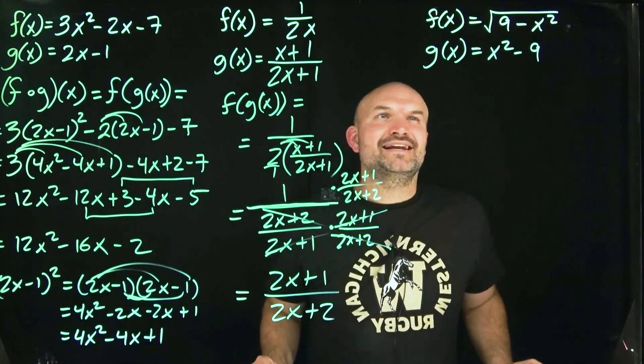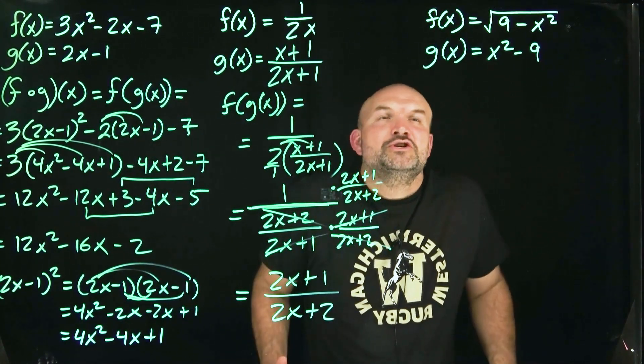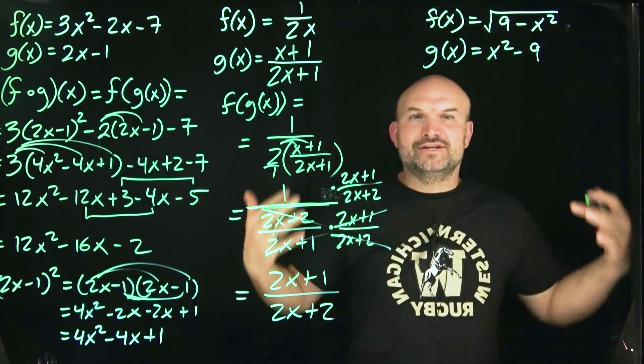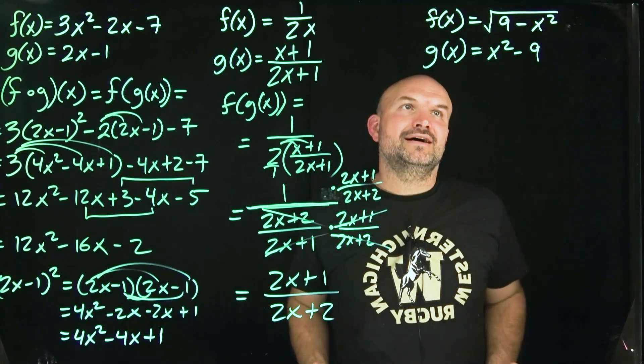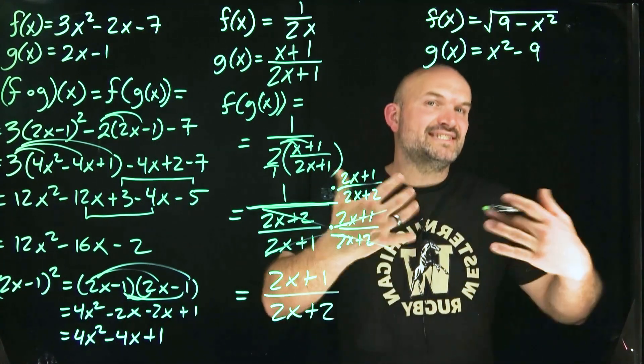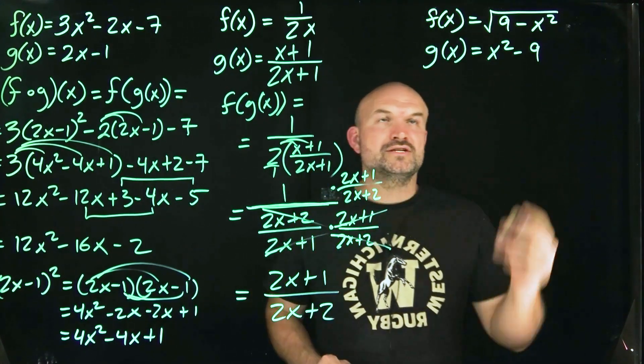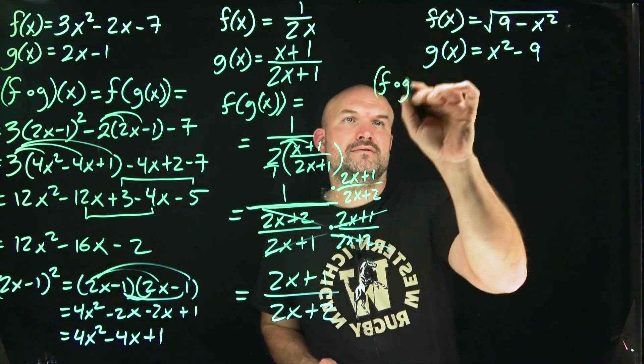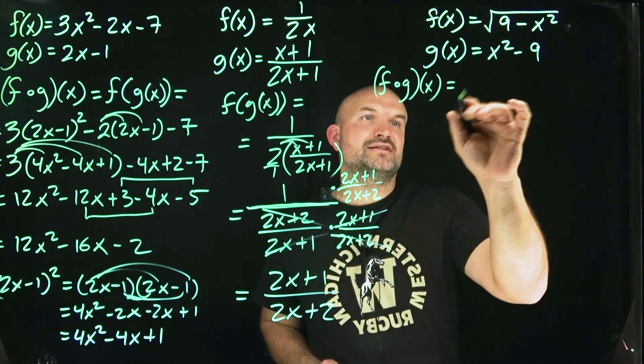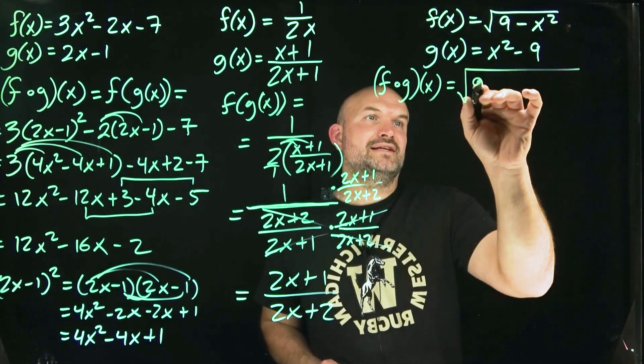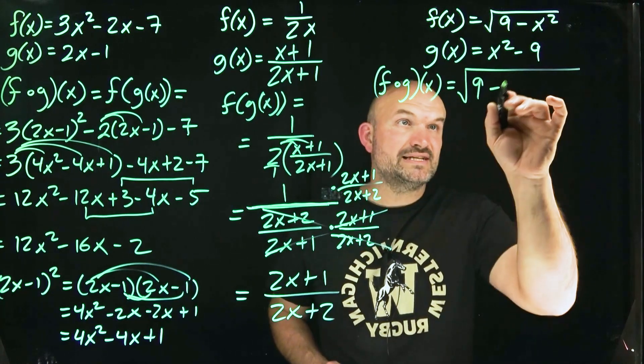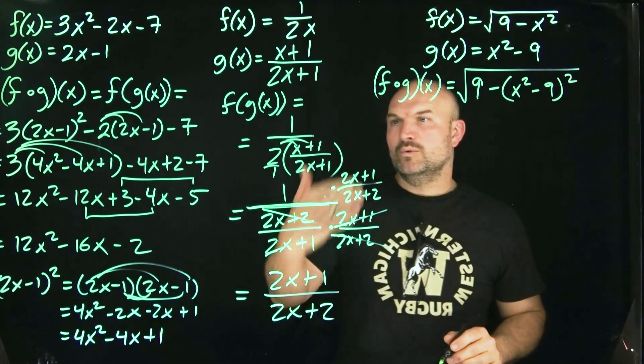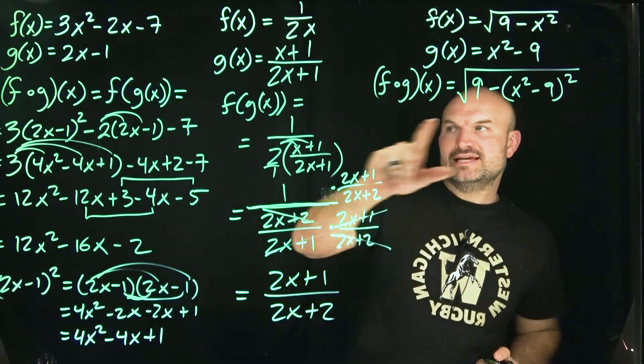Now, let's get to the hard one. And again, you might say, well, why is this one hard, right? You're just doing the same process. You're plugging in the function g of x into the function f(x). And you're right. This one can just have a little bit more difficulty if we want to simplify it as much as possible. So let's kind of go through the steps here. If I say f of g of x, right? I'm going to plug g of x into f of x. So when I go ahead and do that, I have a 9 minus parentheses x squared minus 9 quantity squared.